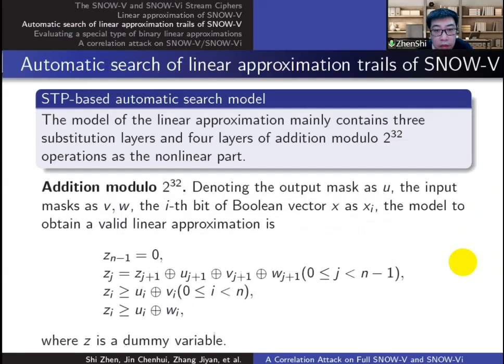We modeled a SAT-based automatic search program and use the STP solver to search for linear trails with high correlations. There are two non-linear transformations in the approximation process.